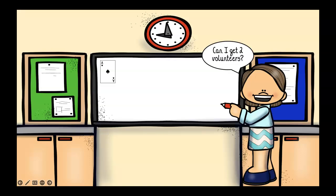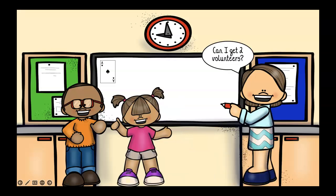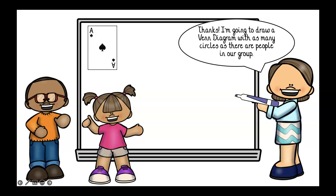Good morning, class. Can I get two volunteers? All right. Thanks, guys. I'm going to draw a Venn diagram on the board and it's going to have as many circles as there are people in our group.